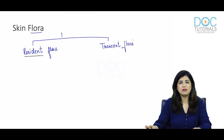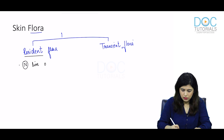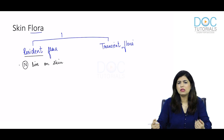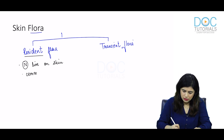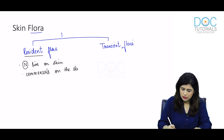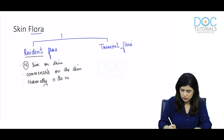As the name suggests, resident means they live here. These resident flora live normally on the skin as permanent residents. They don't harm us, we don't harm them, and this is called being commensal. So these bacteria live as commensals on the skin, and they normally do not cause disease.